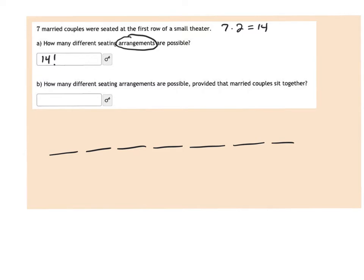So one, two, three, four, five, six, seven blanks. In these blanks, we know that there are seven couples. So there's seven couples that could go here, then six couples that could go in the next two seats, then five couples, then four couples, then three couples, then two, and then there's only one left. Now, here's the tricky part: each couple can be arranged in two different ways. So that means there's two possibilities for each of the seven couple slots.